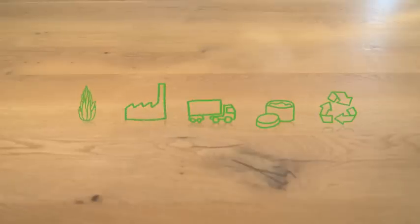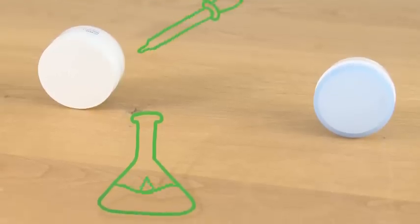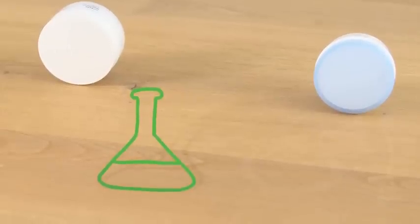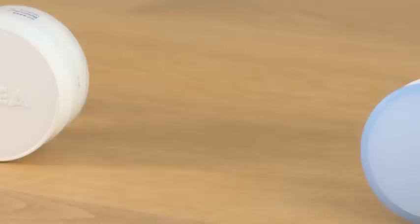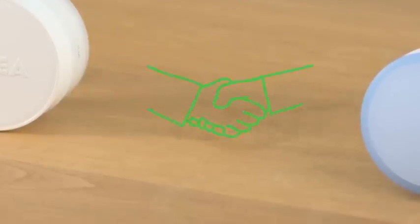So from here on, we are going to use life cycle assessments to identify the hot spots in our products, and that through our entire product range. And we will use that to work with our research and development to develop more environmentally friendly products, and also to work with our packaging suppliers and raw material suppliers to identify what we can do better.